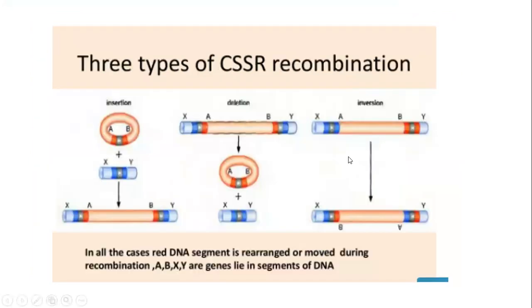There are three types of CSSR recombination: insertion, deletion, and inversion. In the case of lambda phage it is insertion; in deletion, a particular region is deleted; and in inversion, the sequence is inverted.